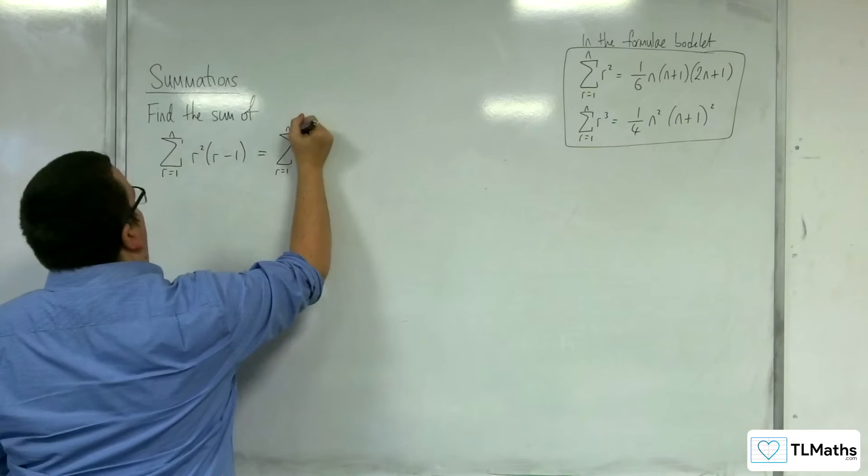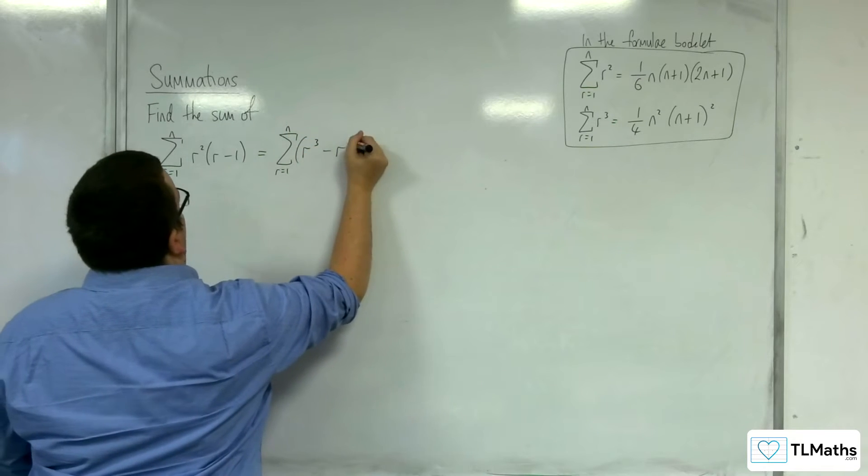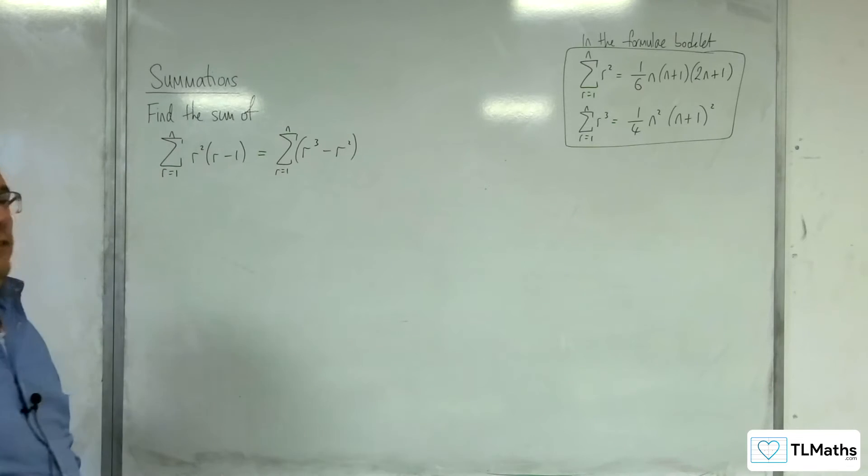So, sum from r is 1 to n of r cubed, take away r squared. That's the first job.